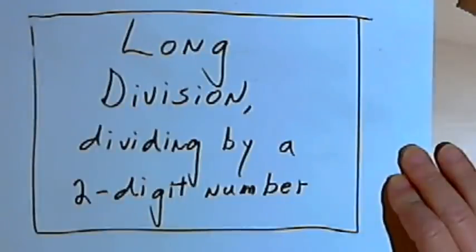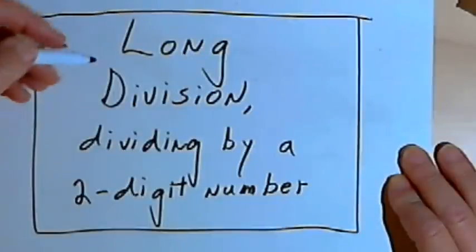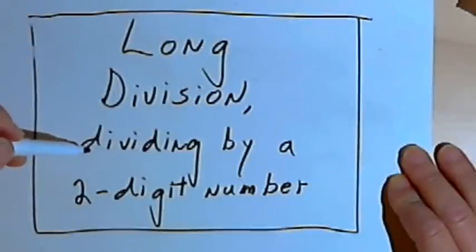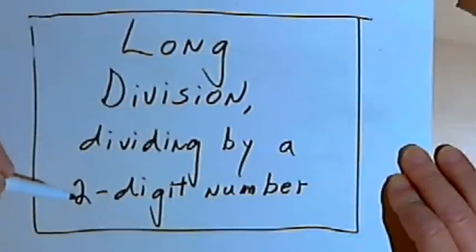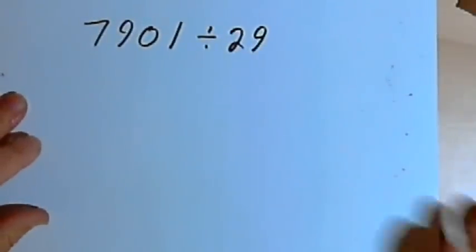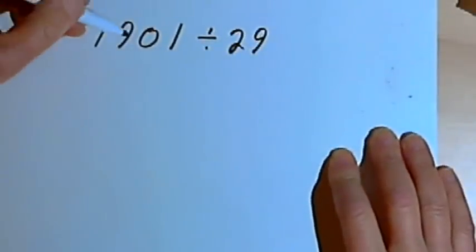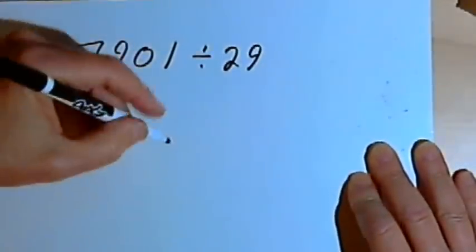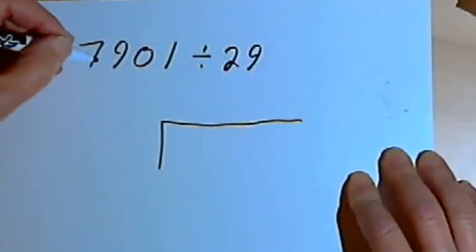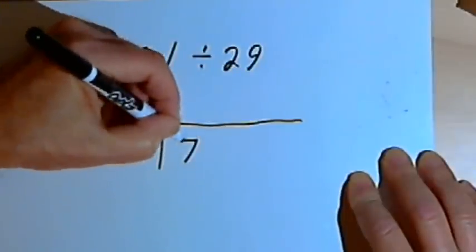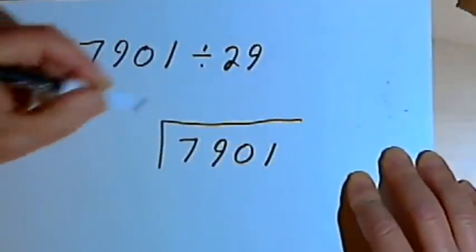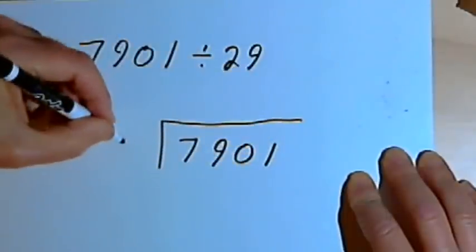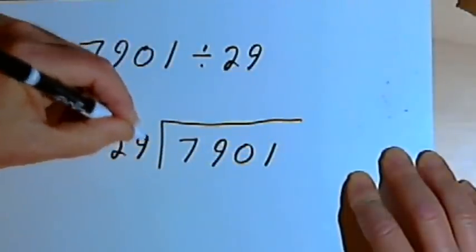This video is provided as supplementary material for courses taught at Howard Community College. In this video I want to talk about long division and specifically dividing by a two-digit number. So here's the first problem. I want to divide 7,901 by 29. So I'll set this up as a long division problem. I'll put the 7,901 in this division box, and my divisor is 29. So I'll put that to the left of the box.